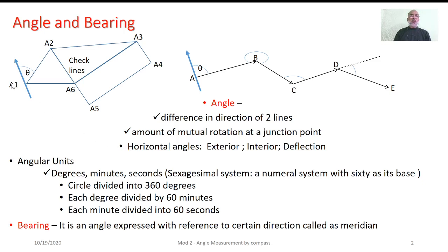As we choose some reference direction, with respect to that we can measure an angle up to the survey line under consideration. Such an angle, which is measured with reference to some reference direction called as meridian, is called as bearing. Hence, bearing simply indicates the direction of a particular survey line with respect to the chosen reference direction called as meridian.